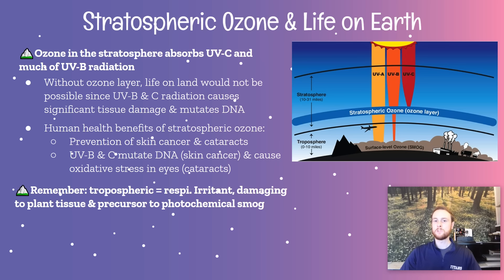Tropospheric ozone is going to be a respiratory irritant, so it can worsen asthma, bronchitis, and COPD. It can also form photochemical smog — it's a precursor and contributes to smog formation. So remember that stratospheric ozone is essential for life on Earth, but tropospheric ozone is not so great for life on Earth.